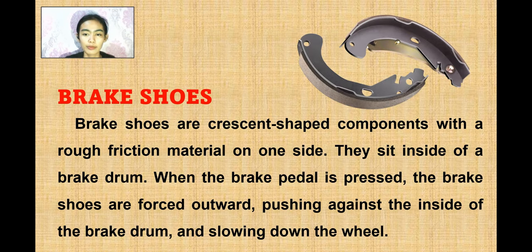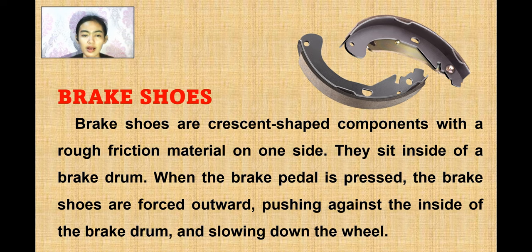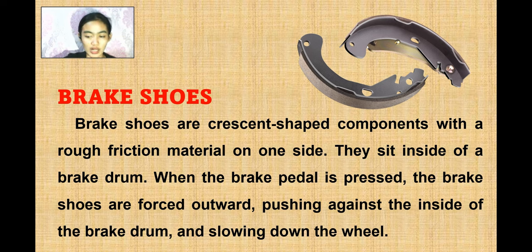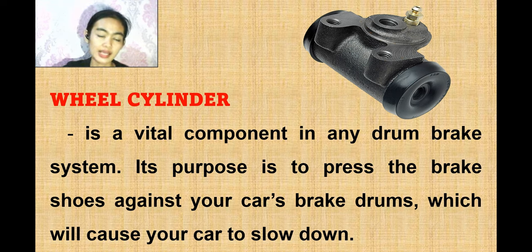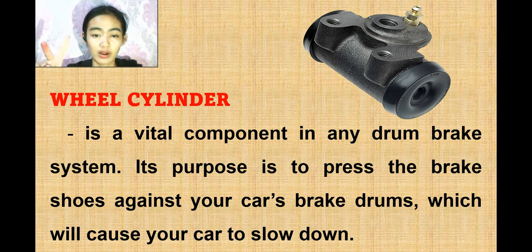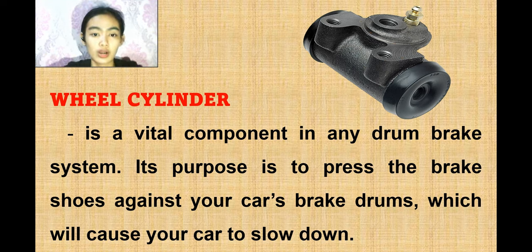Brake shoes are shaped and composed with rough friction material on one side. They sit inside the brake drum. When the brake pedal is pressed, the brake shoes are forced outward, pushing against the inside of the brake drum and slowing down the wheel. The wheel cylinder is a vital component in any drum brake system — its purpose is to press the brake shoes against the brake drum to slow the car. The two vital components in a drum brake to stop the car are the brake shoes and the wheel cylinder.